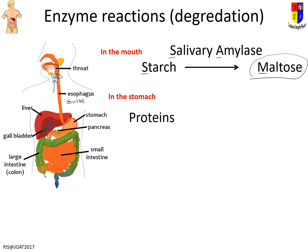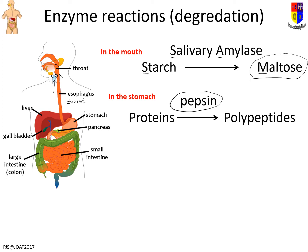In the stomach, proteins start getting broken down. The reaction is: protein → pepsin → polypeptides. This is an important example for enzyme reactions because the stomach is pH 2, which means this particular enzyme has an unusual optimum pH, making it a really good example.